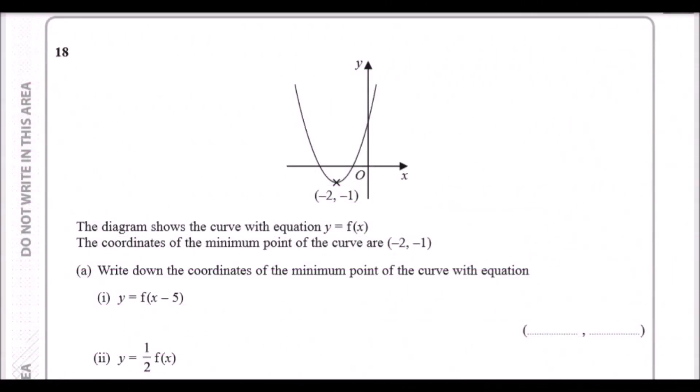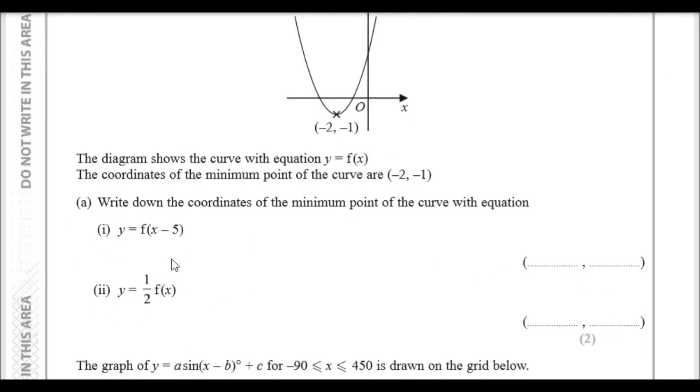And here we go guys, number 18. The diagram shows a curve of equation y equals f(x). This is a typical quadratic curve, a U shape. The coordinates of the minimum point, the turning point right over here, with x markers is (-2, -1). They want us to write down the coordinates of the minimum point of the curve with equation, in other words they just want us to shift the graph.